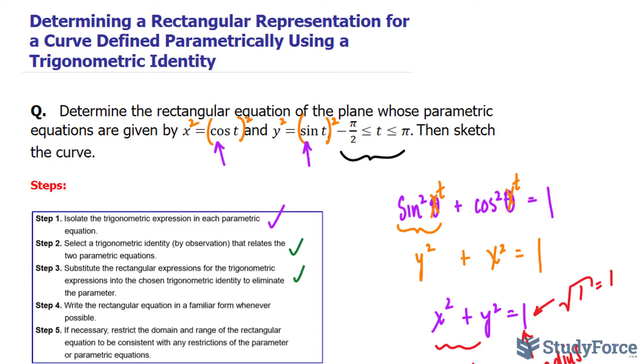And there you go. So that is how to determine the rectangular representation for a curve defined parametrically using a trigonometric identity.